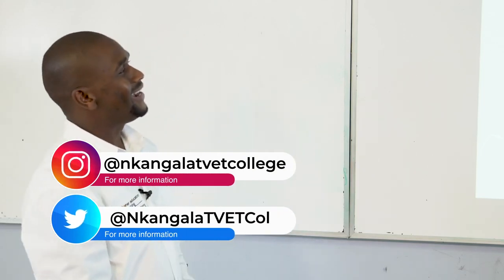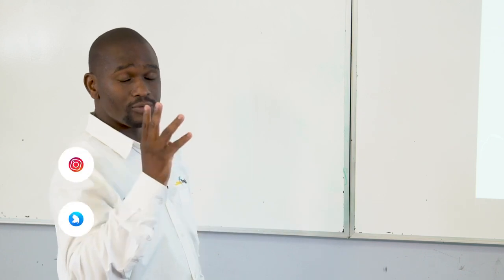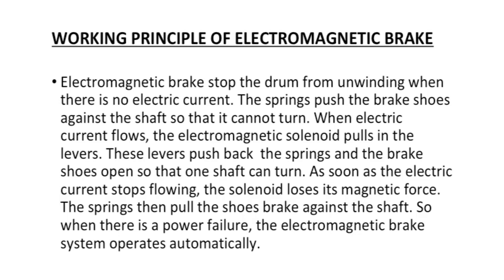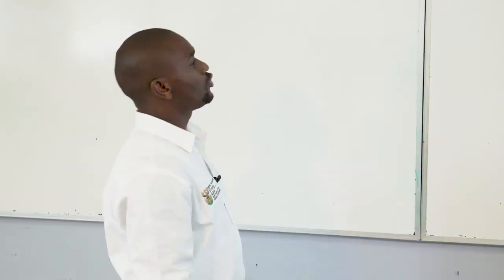Working principle of electromagnetic brakes: electromagnetic brakes stop the drum from unwinding when there is no electric current. Springs push the brake shoes against the shaft so that it cannot turn. When electric current flows, the electromagnetic solenoid pulls in the levers, which push back the spring so the brake shoes open and the shaft can turn. As soon as the electric current stops flowing, the solenoid loses its magnetic force and the springs pull the shoes back against the shaft. When there is a power failure, the electromagnetic brake system operates automatically.